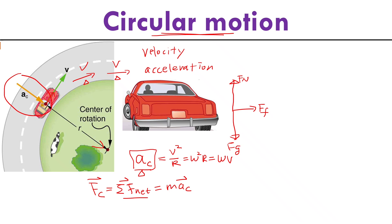Now you understand that centripetal force is not a separate force, but it's the net external force pointing to the center. Without this net external force, you cannot have centripetal acceleration. So for the car moving in a circle, where is my net external force pointing to the center? Let's consider the rotation center and construct our x-axis along the radial direction.